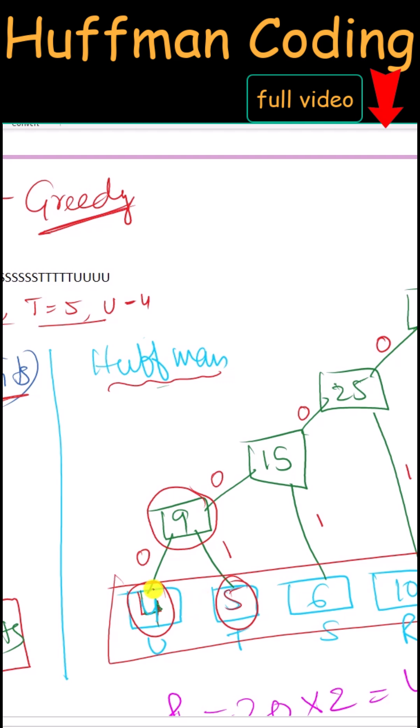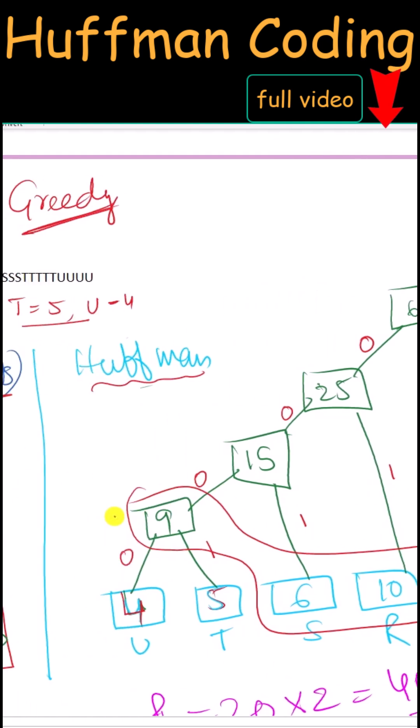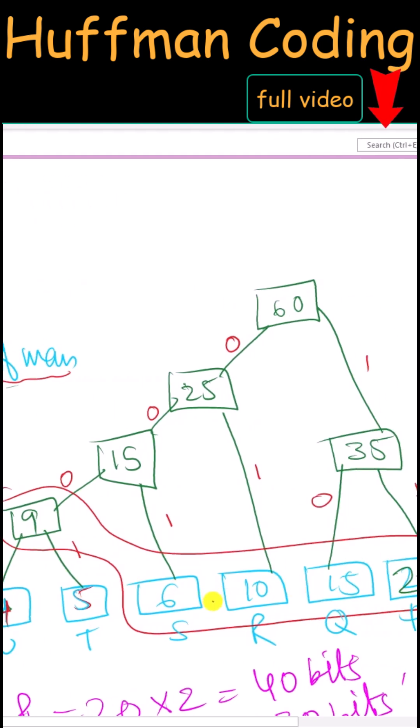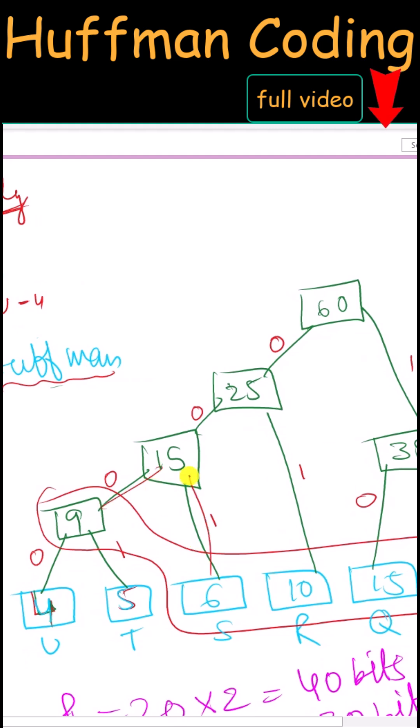First we have merged 4 and 5, so we have the new node 9. Next we have to follow the same process for all of these nodes. We have to find the minimum two nodes and merge them together.